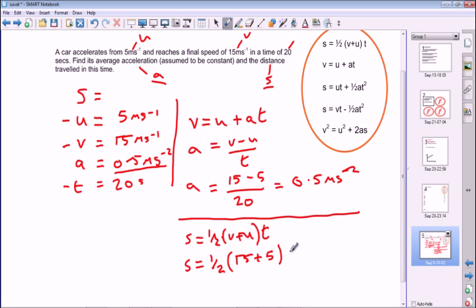Times t which is 20. So we've got a half: 15 plus 5 is 20, so it's a half of 20, times 20. 20 times 20 is 400, so s is going to be 200 meters. We know the units are going to be meters because all of these are in standard units of meters per second, et cetera, meters per second and seconds.